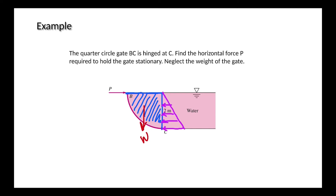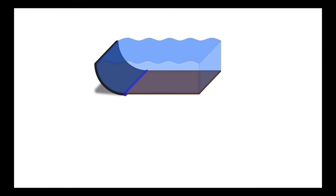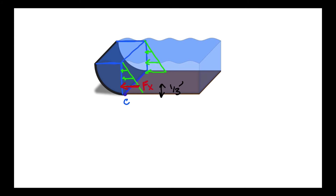For a better understanding, let's look at the three-dimensional view of our gate. In this figure, our liquid block is a volume. This is the quarter circle gate and this is point C, which the gate is hinged about. There is no atmospheric pressure at the free surface, so the horizontal force distribution has a triangular form. The resultant hydrostatic force is applied to the center of pressure, which is the geometric centroid of this force distribution. If I call the height h, then the centroid of the triangle is located at one-third times h.